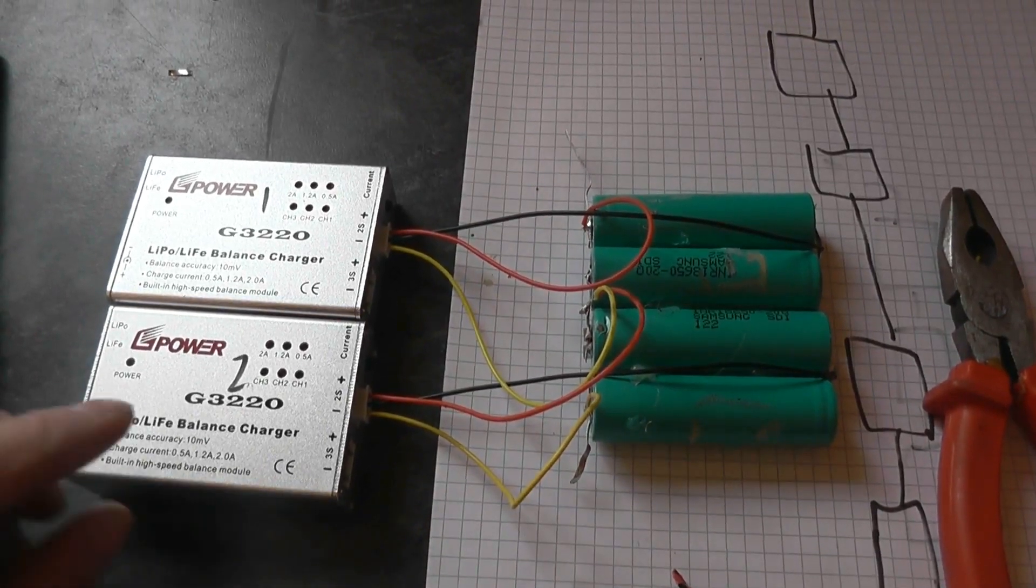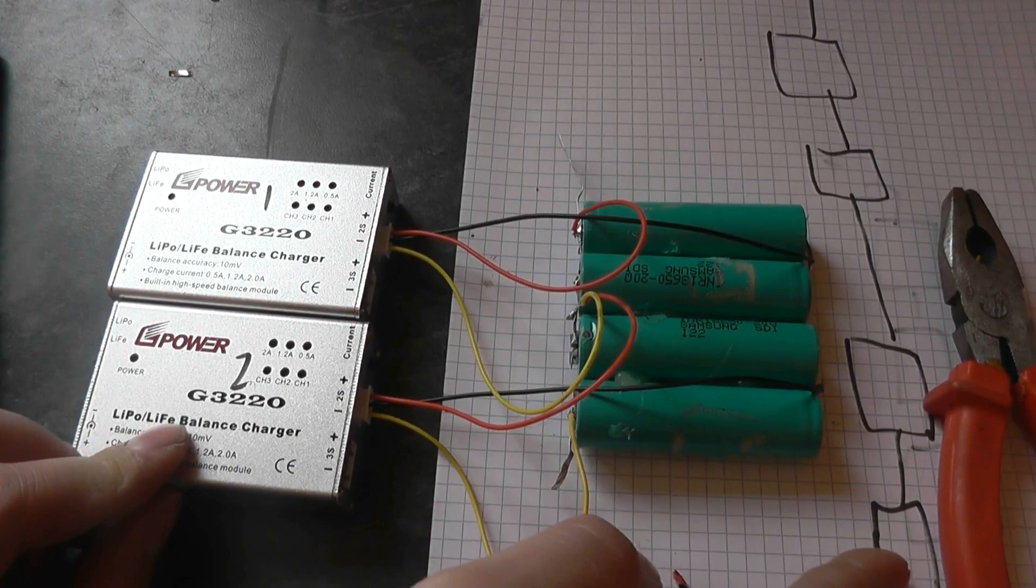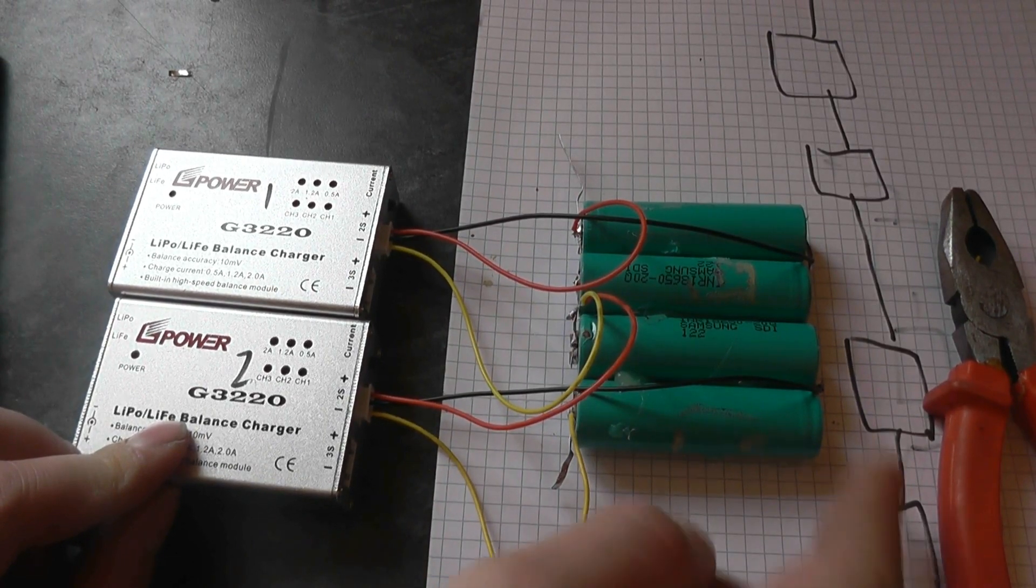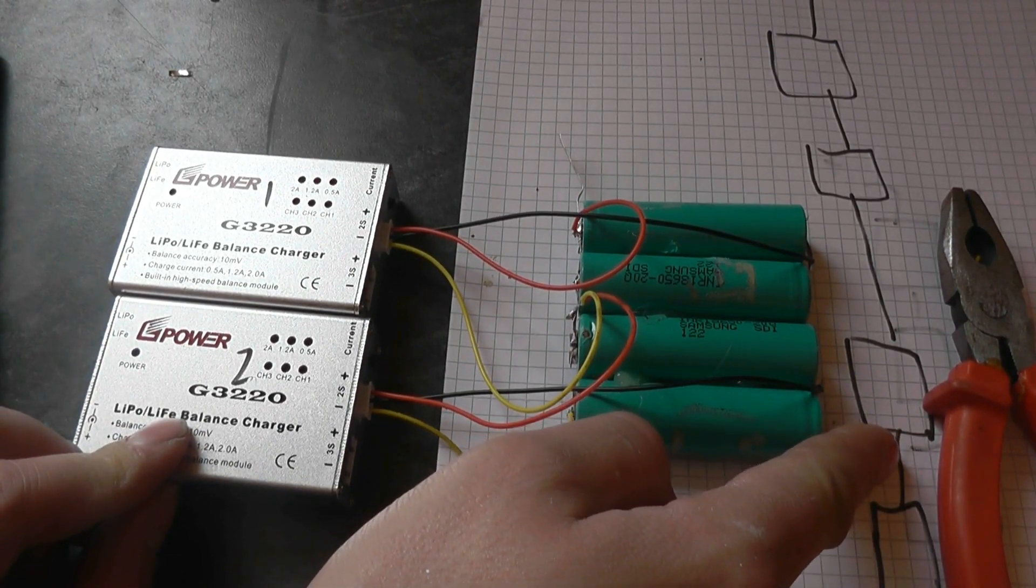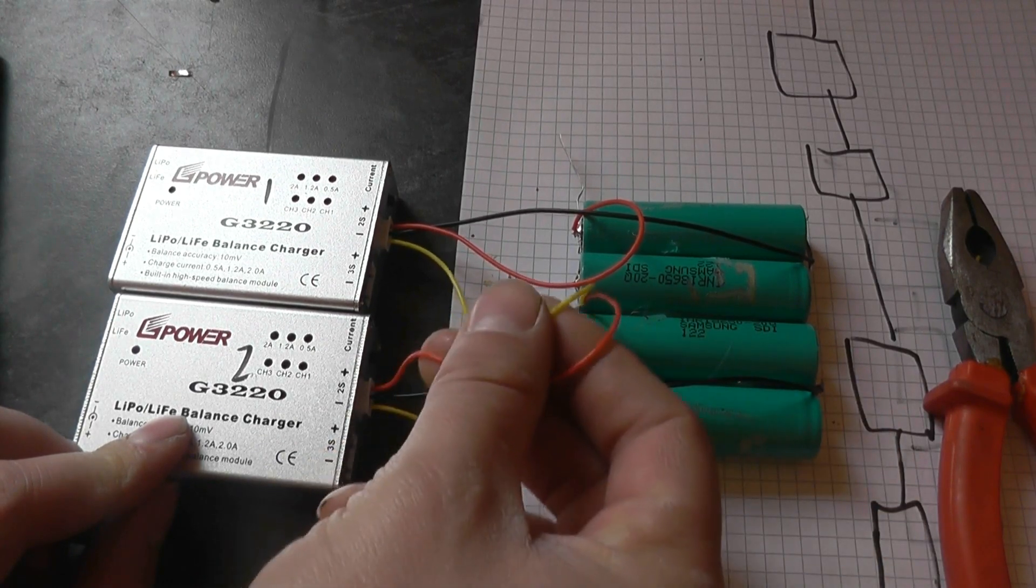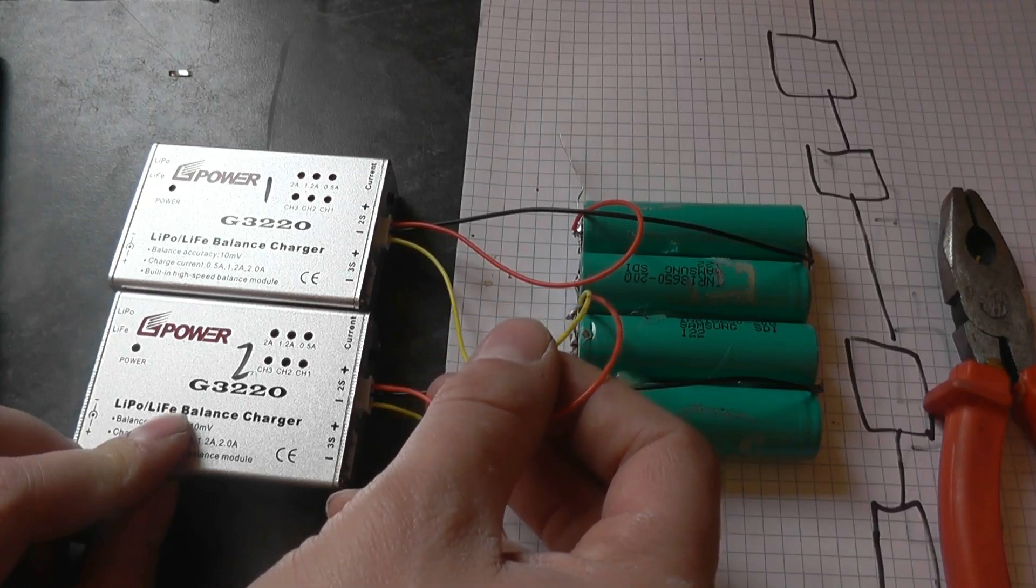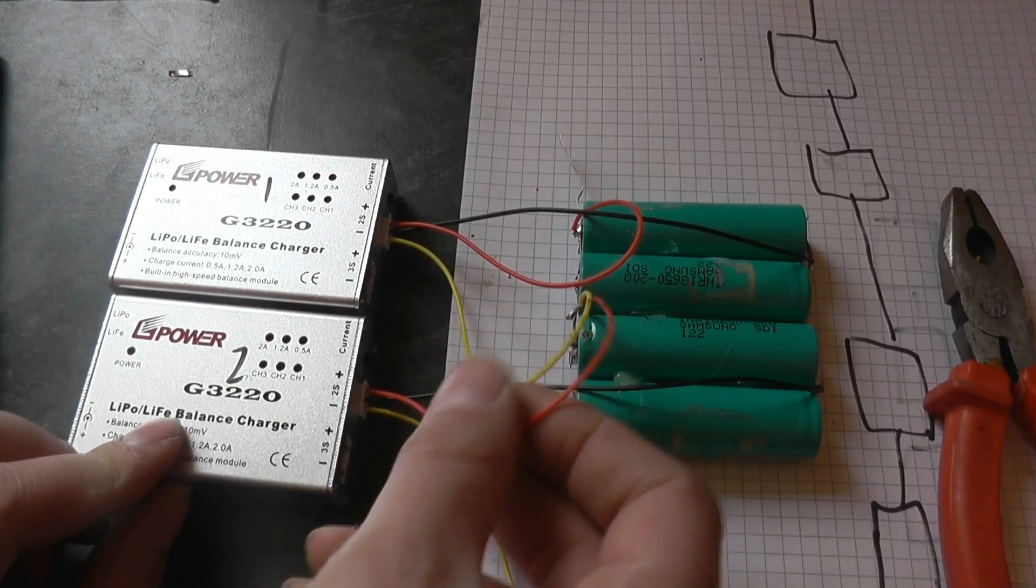Right, so I have them all connected up. Here we have bottom negative, which is down here. Then we have black, which is there. We have the red positive, and the yellow negative, the red from the second pack.